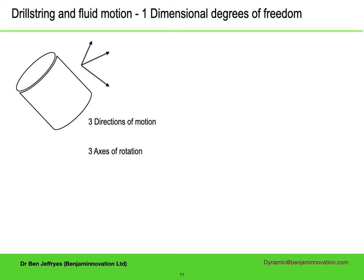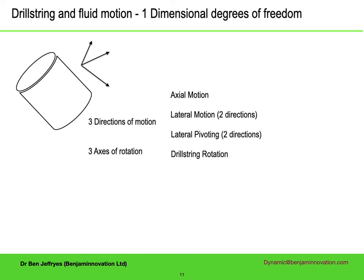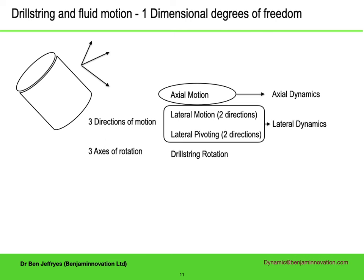An averaging process takes us from a 3D model of the system to a 1D model. The model now has just one coordinate — length — and along that length there are a small number of variables. Effectively, there is an infinitesimal rigid body at each point, which has 6 degrees of freedom: it can move in 3 directions and rotate about 3 axes — axially, laterally in 2 directions, pivot laterally in 2 directions, and rotate about its long axis. The axial motion results in axial dynamics. The lateral motion and lateral pivoting combine to produce lateral dynamics, which has 4 of the 6 degrees of freedom. Drill string rotation gives rotational dynamics.